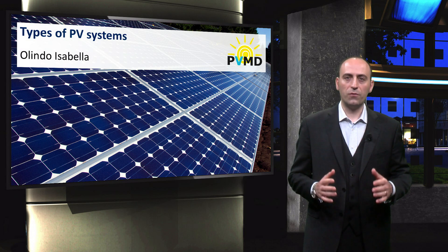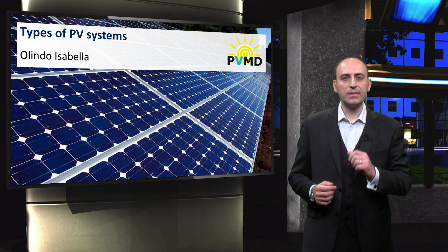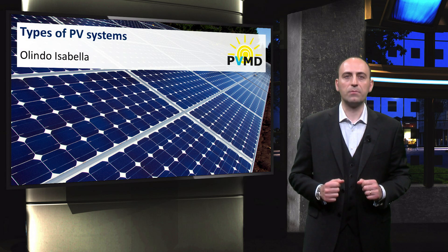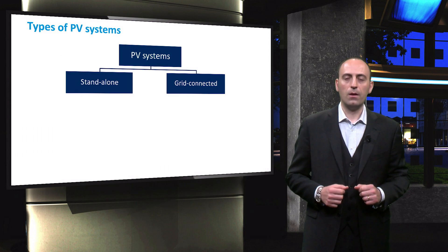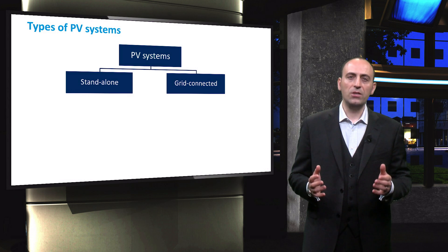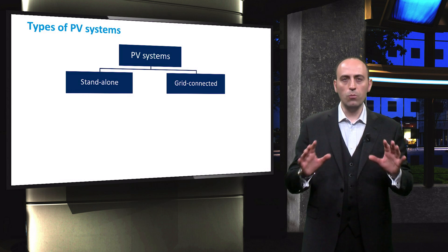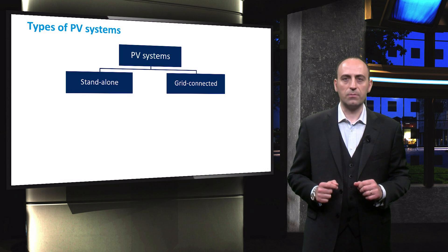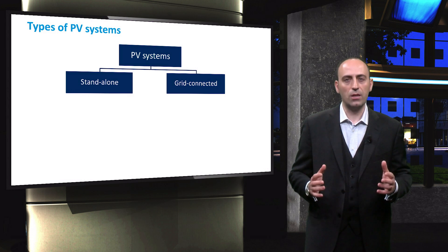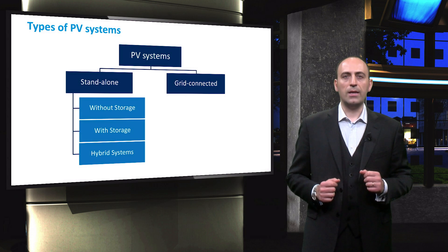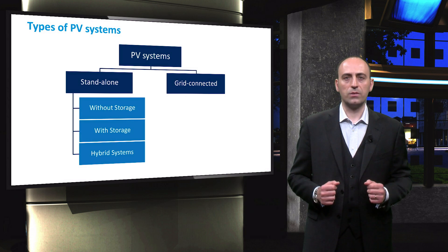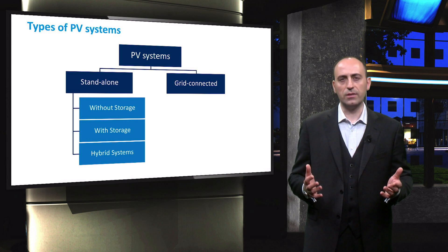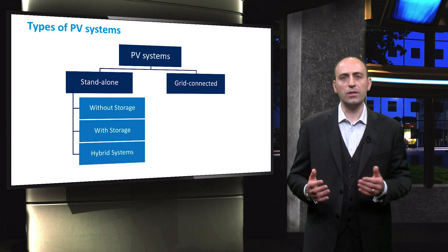After discussing the framework in which photovoltaic systems have to interact, we will now discuss the different types of PV systems that can be realized. Generally speaking, we can divide the PV systems into two main groups. On the right-hand side are the grid-connected systems, and on the left-hand side are the standalone systems, which are also known as off-grid systems, to differentiate them from the grid-connected group.